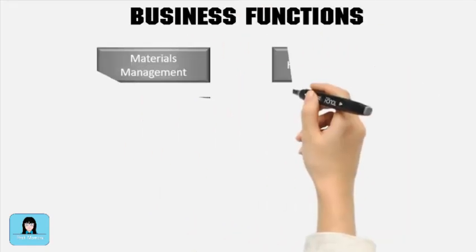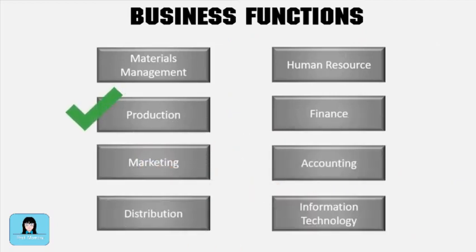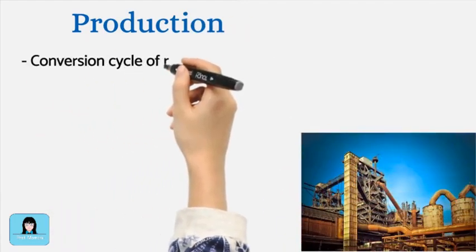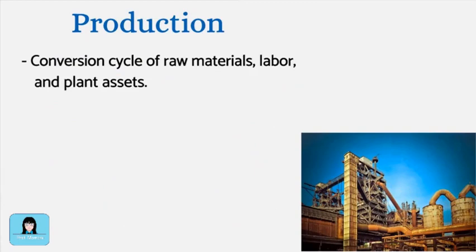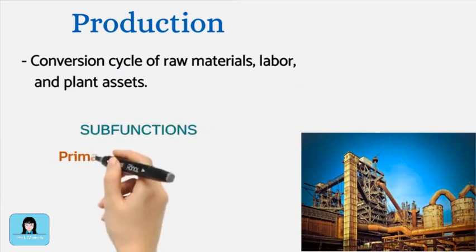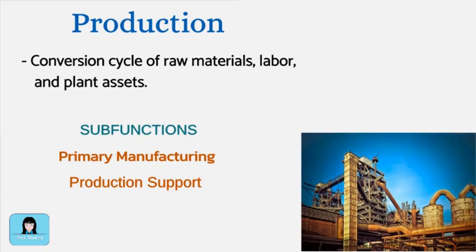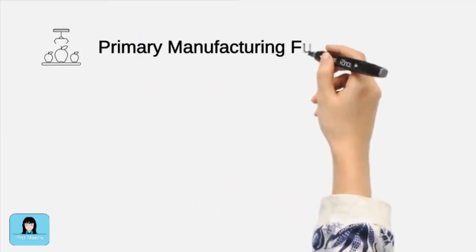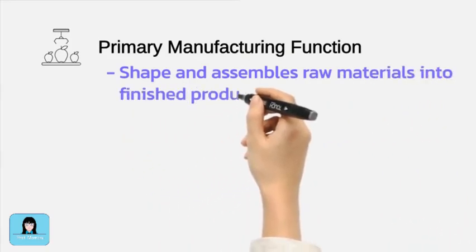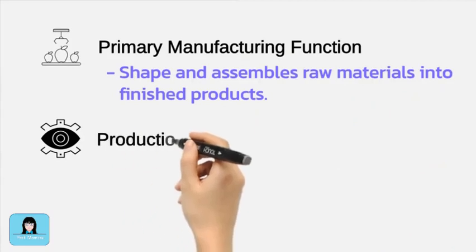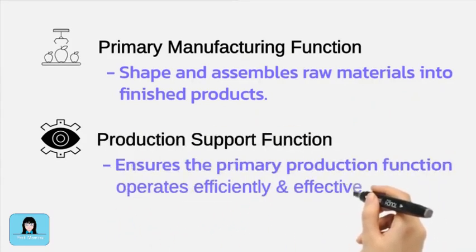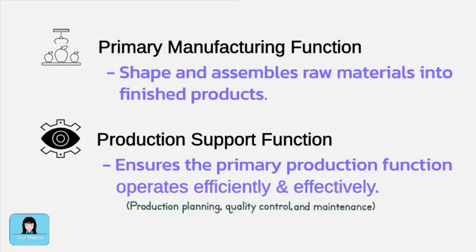The next business function is production. The production function is responsible for the conversion of raw materials into finished products. There are two activities in the production function: the primary manufacturing activities and production support activities. The primary manufacturing function is directly involved in the actual conversion of raw materials into finished products. The production support function is composed of production planning, quality control, and maintenance, and ensures that the primary production function operates efficiently and effectively.